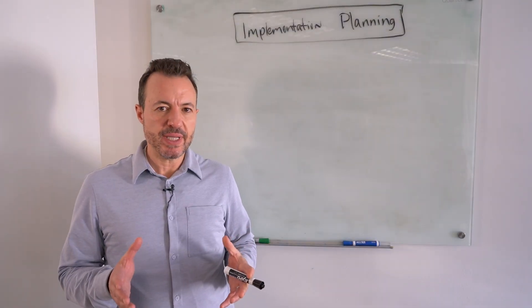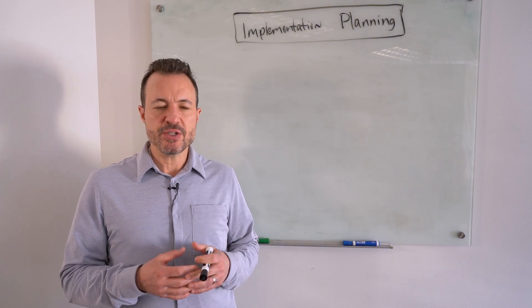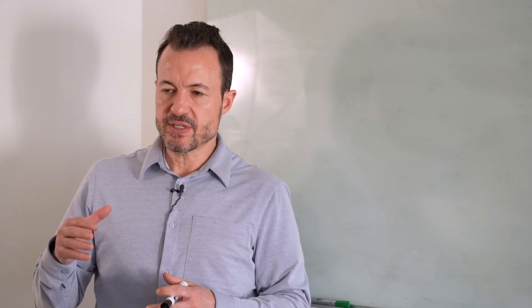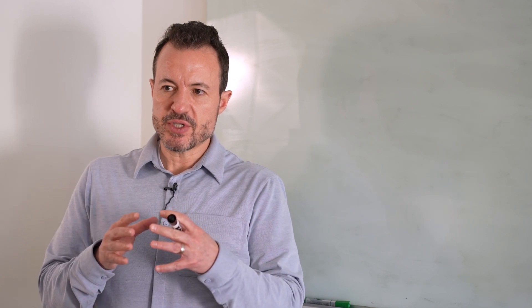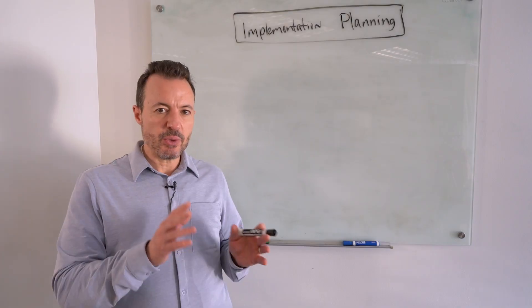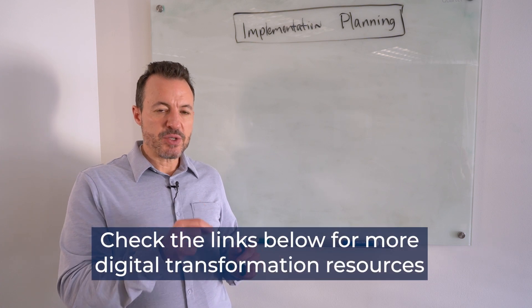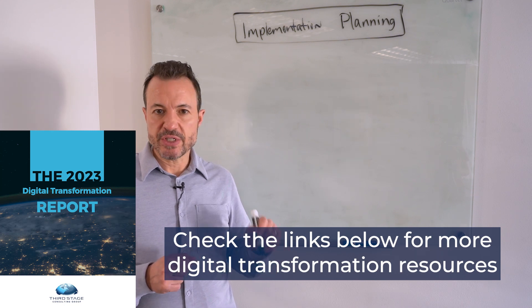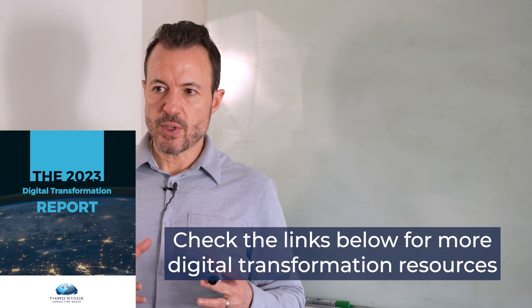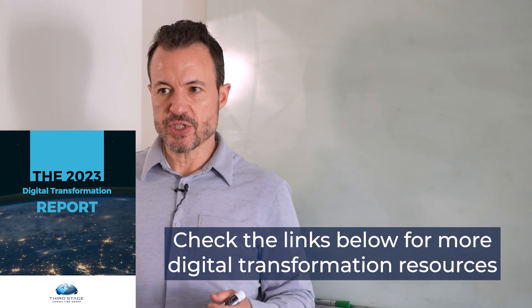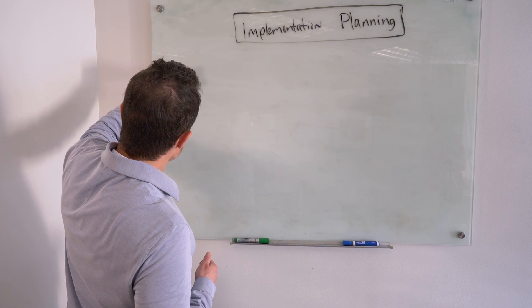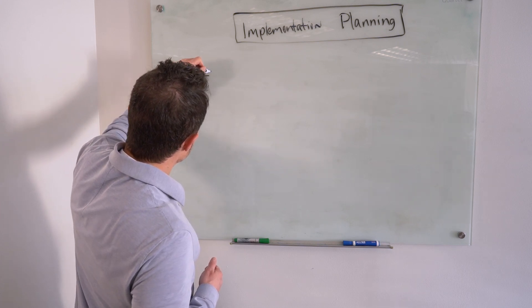When putting together an implementation plan, one of the first things you can do that's very effective is to look at implementation benchmarks — not anecdotal examples, but a broad cross-section of data from organizations that have been through digital transformations. I'm going to share a few of those benchmarks, which you can also find in our digital transformation report — linked in the description below. That report has benchmarks and metrics around what the average implementation looks like.